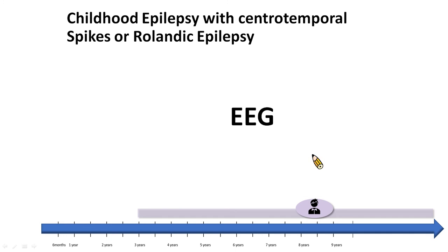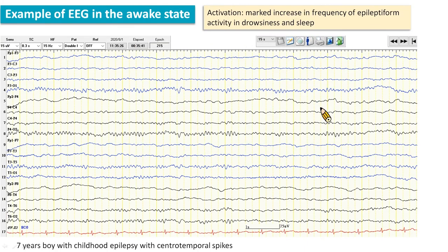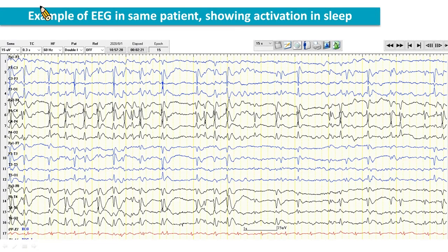Let's see the EEG. The background is normal. As seen in this EEG, there are simultaneous maximum negativity in central temporal electrodes and maximum positivity frontally, which is considered as horizontal dipoles. The next slide shows epileptiform discharges enhanced in sleep. This awake EEG shows a normal background with no epileptiform discharge. The sleep EEG of the same patient shows frequent epileptiform discharges over bilateral central temporal areas.